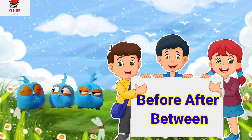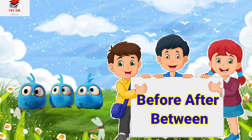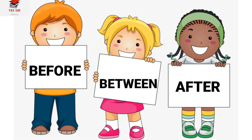Our next chapter is before, after, between. We use before, between, and after when we talk about some objects, things, and numbers position. Before means aage, between means majkhane, after means baad. So friends, let's go.